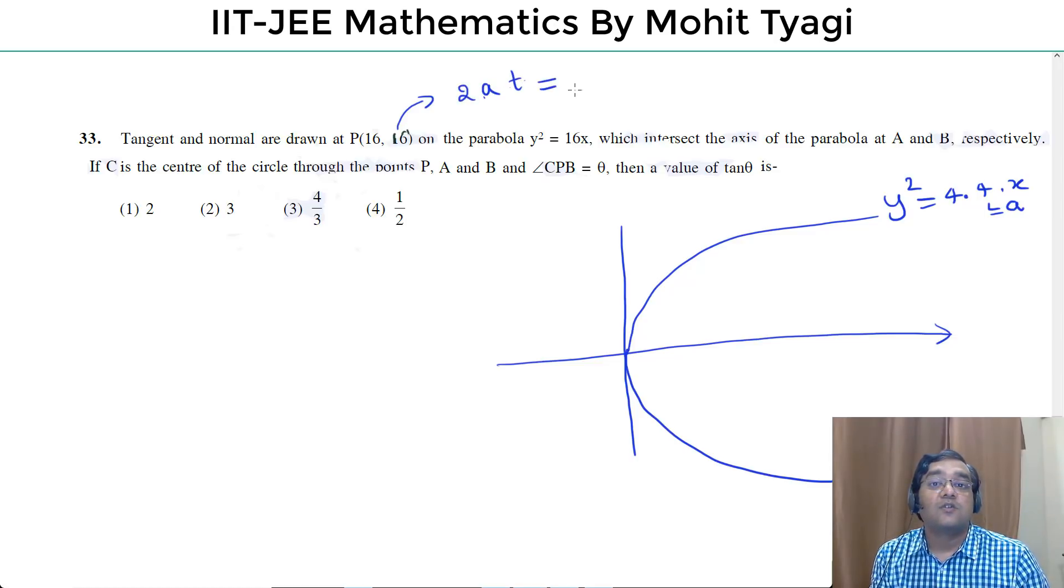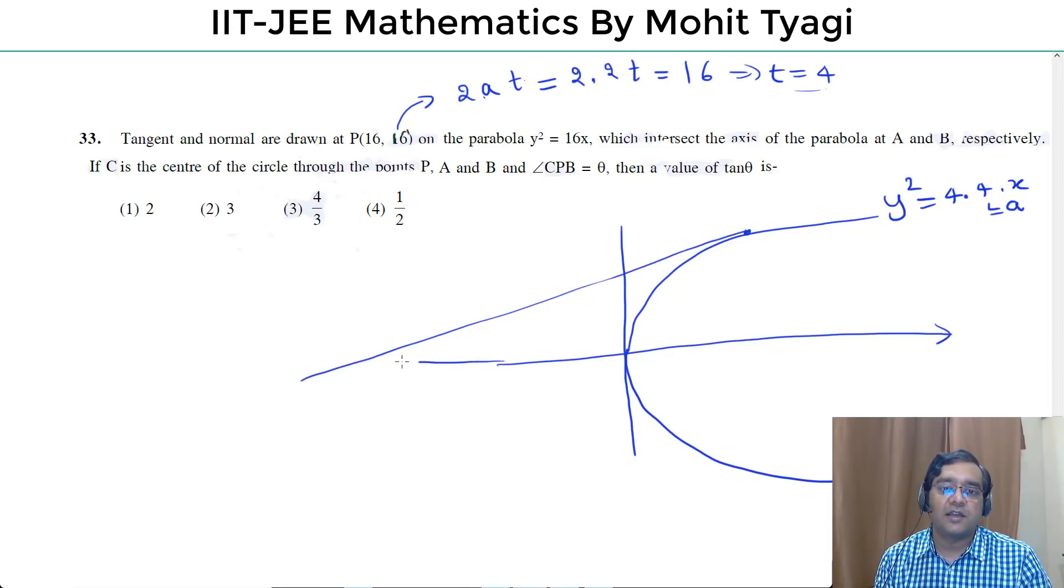Because we remember the result in the parabola. The result of the parabola is at², 2at, so here is a point where the tangent is drawn which intersects the axis of parabola at A and B.